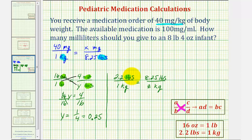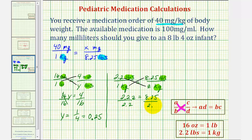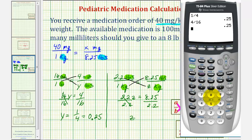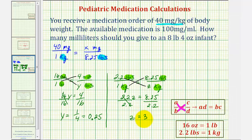Notice how we have the same units on top and the same units on the bottom, so we can cross multiply and solve for Z. 2.2 times Z must equal one times 8.25, so 2.2Z equals 8.25. Divide both sides by 2.2 — Z is equal to 8.25 divided by 2.2, which is 3.75. Which means 8.25 pounds is equal to 3.75 kilograms.